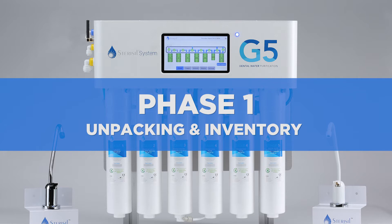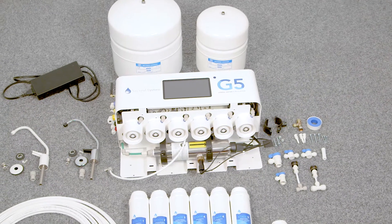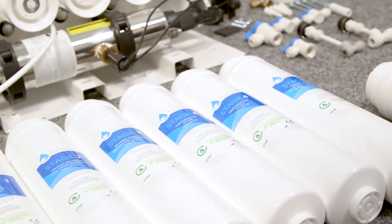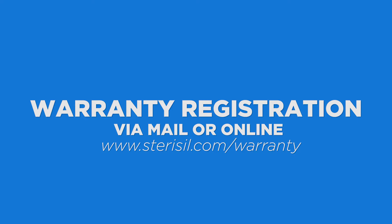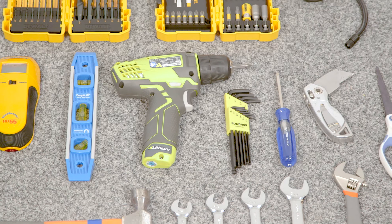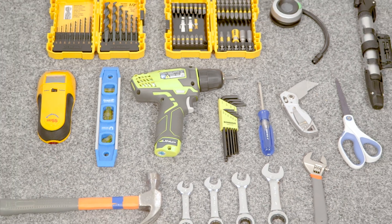Phase 1, unpacking and inventory. Start by unpacking and verifying the contents of each box and be sure to review the user manual. Please return the warranty registration form via mail or register online immediately upon installation. Next, gather up the list of required tools.